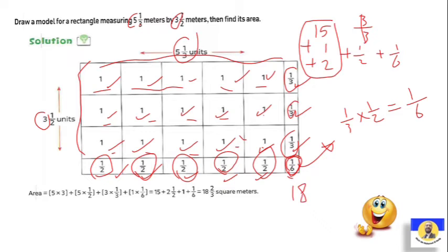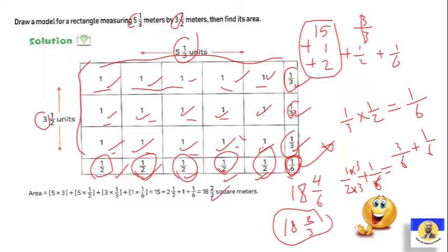What remains? The half and the six. How do we add them? As we learned before, to make them six, we multiply by three up and down. So it will be three over six plus one over six. The answer equals four over six. So the answer will be 18 and four over six, which we can divide by two, so it becomes 18 and two thirds. That's the answer.